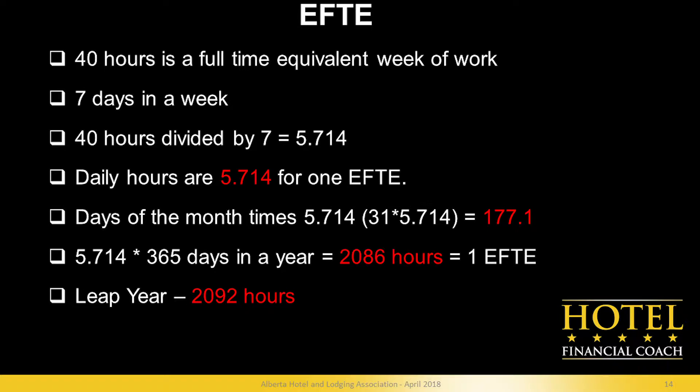To figure out an EFTE for a month, we simply multiply 5.714 by the number of days in the month. In a month with 31 days it's 177.1, with 30 days it's 171, and with 28 days it's 160. The number of hours equaling an EFTE for a year is 2,086, and for a leap year it's 2,092. To figure that out, all we do is multiply the number of days times 5.714.